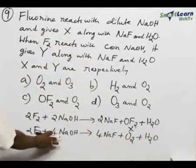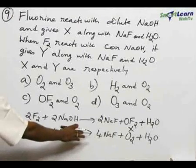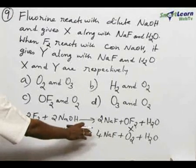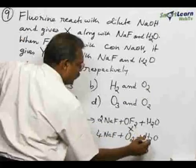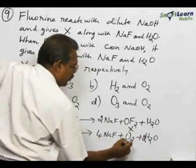When fluorine reacts with concentrated alkali, we get sodium fluoride, oxygen gas, and 2 moles of water. Here O2 is Y.